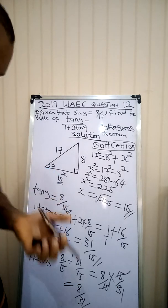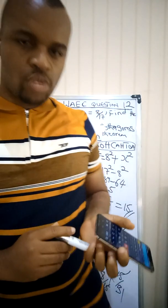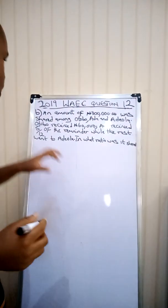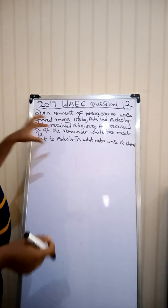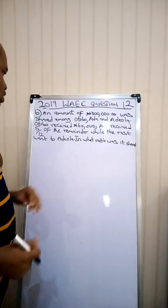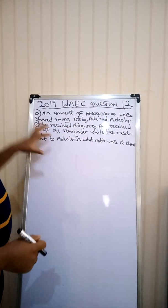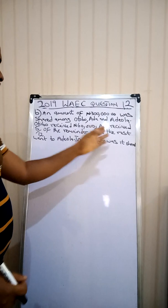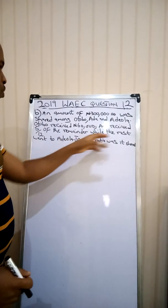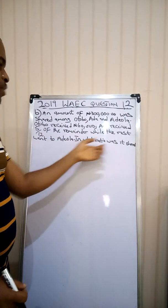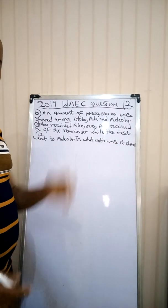That's the A part of the question. Now let's see what the B part is asking us to do. The B part says: an amount of 300,000 Naira was shared among Otobo, Ada, and Adeola. Otobo received 60,000. Ada received 5 over 12 of the remainder, while the rest went to Adeola. In what ratio was it shared?